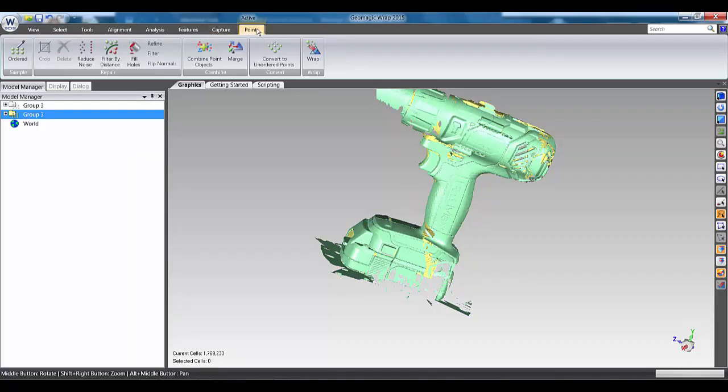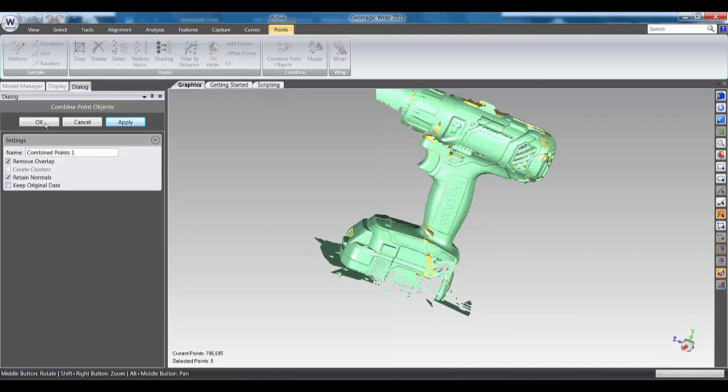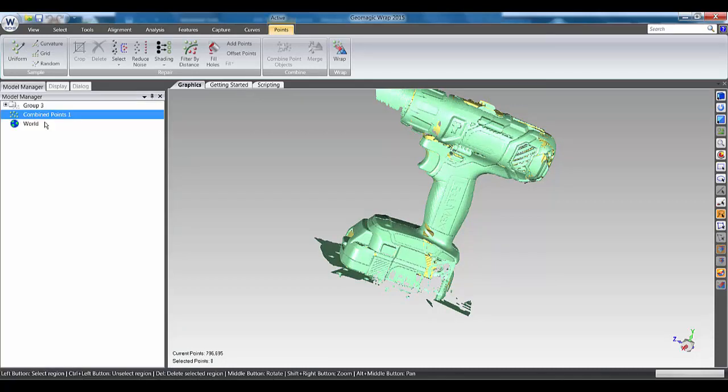What I would probably do next is go in and combine those points to thus remove any overlap between those scan passes. That's now complete, and we've reduced the number of points by well over a half by doing that.